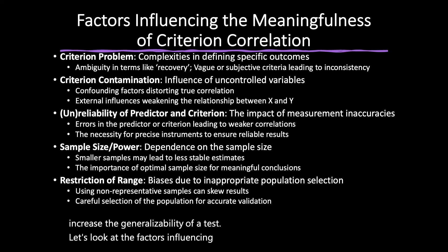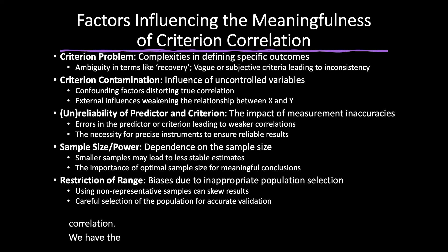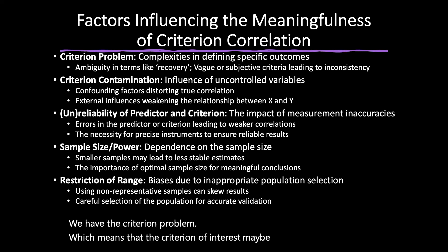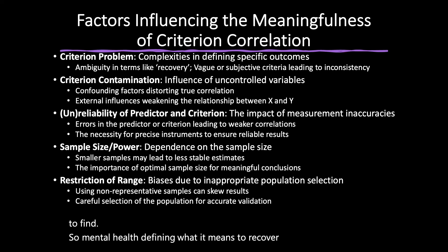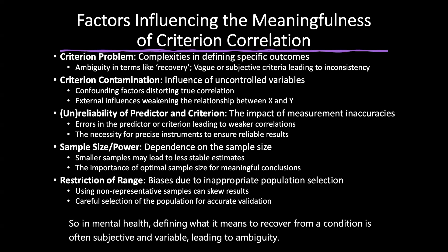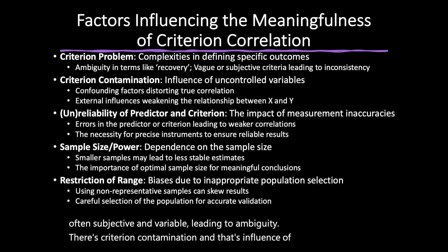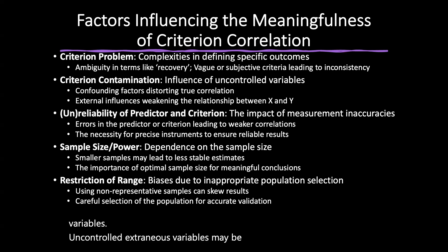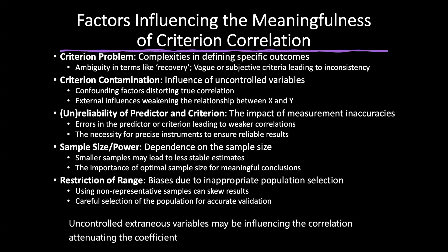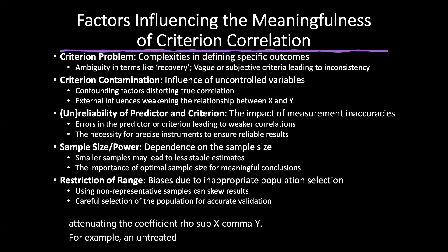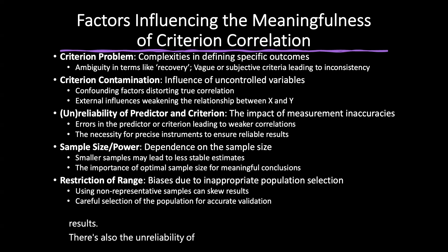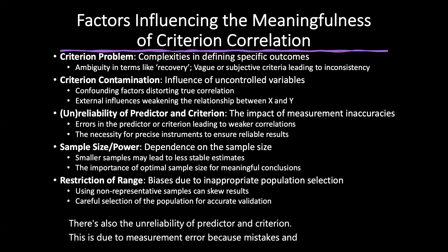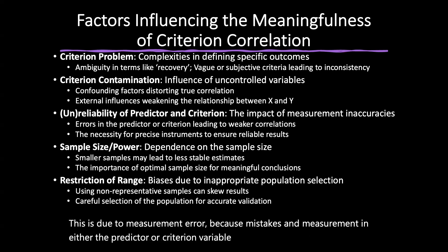Both concurrent and predictive validity fall under the umbrella of criterion validity. For concurrent validity, the time frame involves measuring how well test scores align with the criterion measured simultaneously — often used to validate a new test by correlating it with a well-established measure, commonly in psychological and educational testing. Predictive validity measures how well test scores predict a criterion assessed in the future, useful for forecasting future behavior, performance, or outcomes — frequently utilized in selection and recruitment, educational admissions, and medical prognosis. Concurrent validity has limitations including bias in the gold standard, the absence of an unbiased objective criterion, and potential confounding factors from simultaneously measuring the criterion.